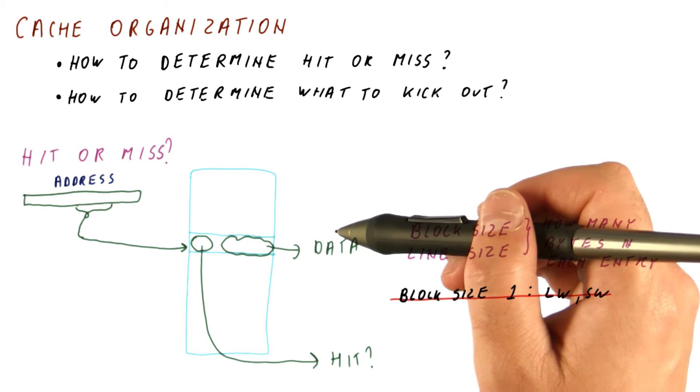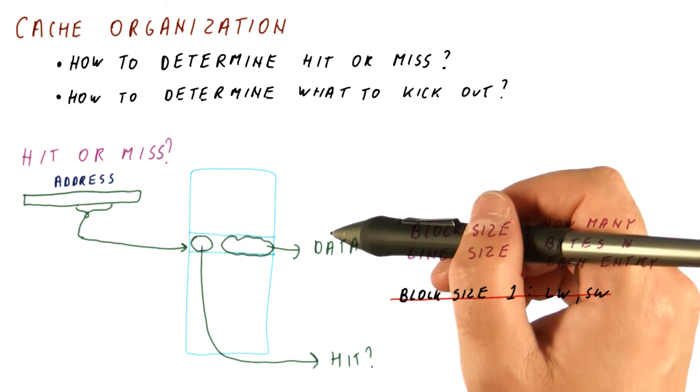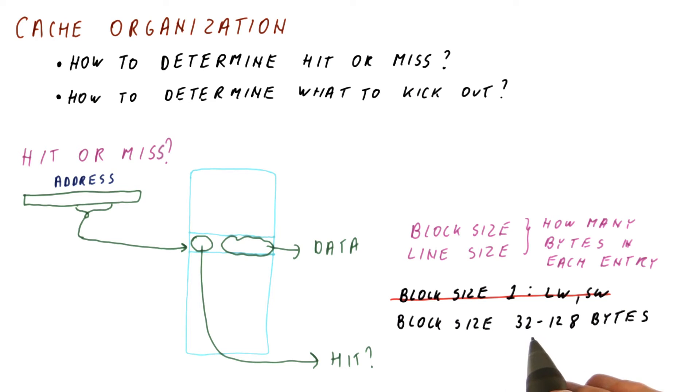But if there is any spatial locality, we want to bring more than what we are just accessing. So typically, block sizes of 32 to 128 bytes work well, both from the perspective of they are larger than a typical access, and also, they capture much of the spatial locality that exists in programs.